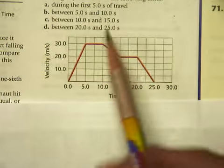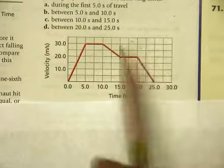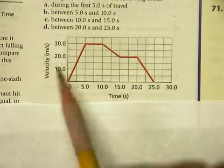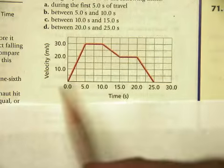Number 82 says refer to the figure below to find the acceleration of the moving object in each of the following times. Part A says the first 5 seconds.